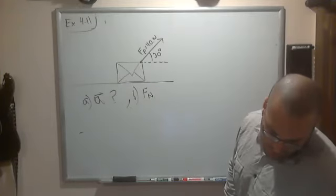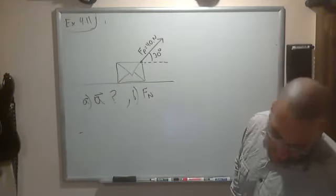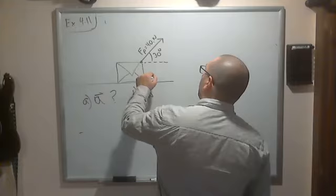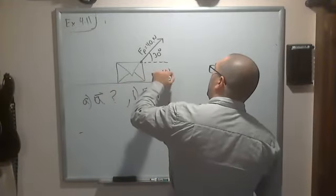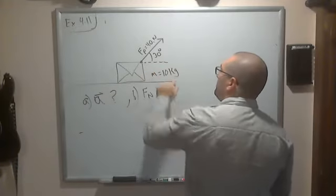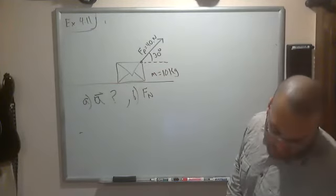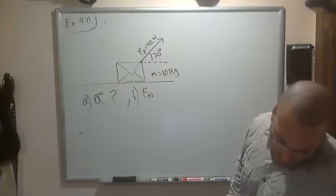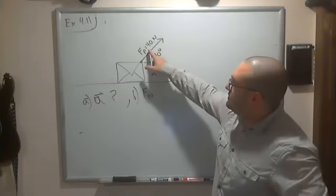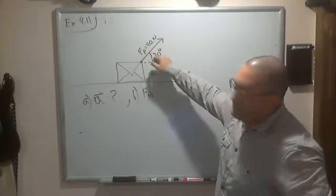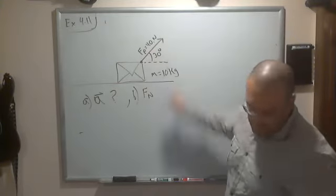We write down everything that we know about the problem. We know that the mass is 10 kilograms — it's the same present that we had before — and this is the magnitude of the force that we pull it at, and this is the angle.